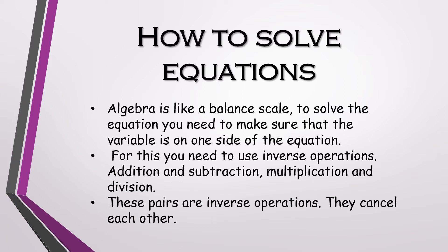To undo an equation, you will need inverse operations. Addition and subtraction, multiplication and division — these pairs are inverse operations. When they are used together, they cancel each other's effect. For example, if you add 7, you get 14. Now if you minus 7 from it, it will come back to 7, which was our starting number. This is exactly what inverse operations do. I will show you all some examples in the next slides.